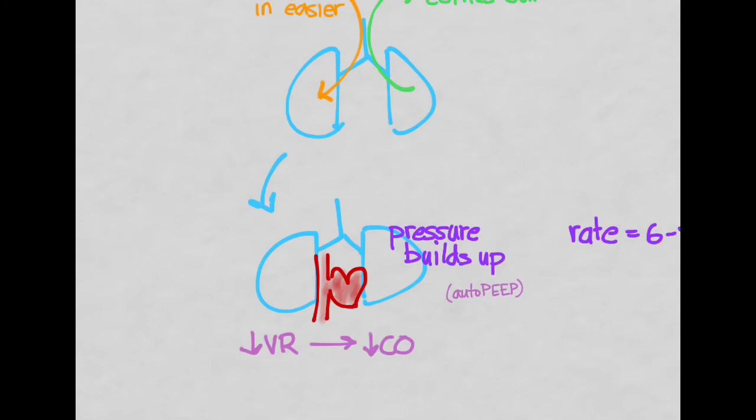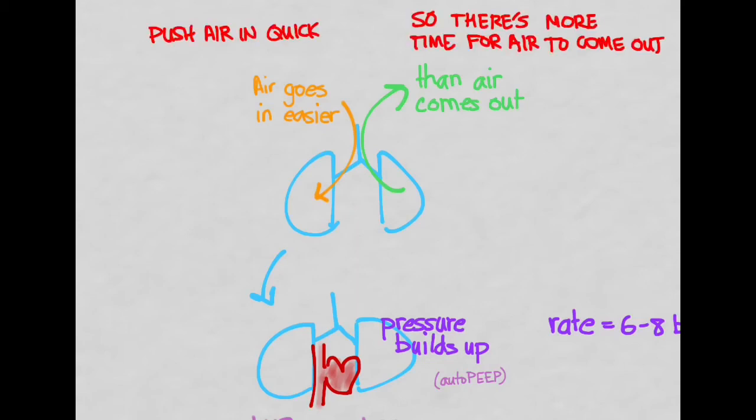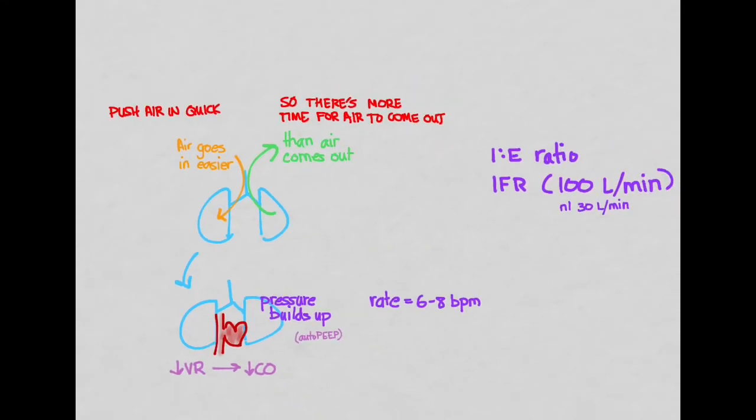So what do we do about that? So the key to this is to make sure that whatever settings we use, that we give plenty of time for the air to come out. So in order to make that happen, we have to push the air in quick. Push it in quick so there's time for air to come out. So how do we do that? Well, most of us are probably breathing about 12 times per minute. And if you think about it, most of that time is spent in inhalation and a very short time in exhalation. And so that's where we're going to have to flip that around. So first thing we can do is we can decrease the respiratory rate a little bit so that there's a lot more time for the exhalation to happen. Maybe set it at 6 to 8.